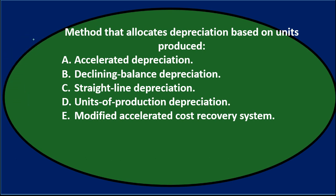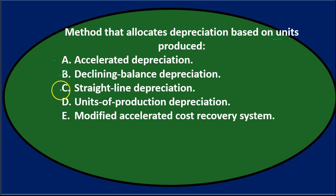Method that allocates depreciation based on units produced. A, accelerated depreciation — there might be an accelerated depreciation method that uses units, but it's not necessarily based on units. B, declining balance depreciation, most commonly double declining — that doesn't typically involve units; we're still dealing with time when using that method. C, straight line depreciation — again, the key here is units, and straight line uses time, not units.